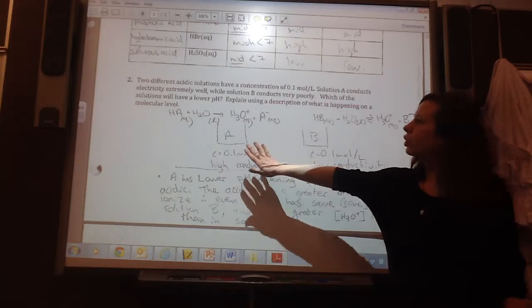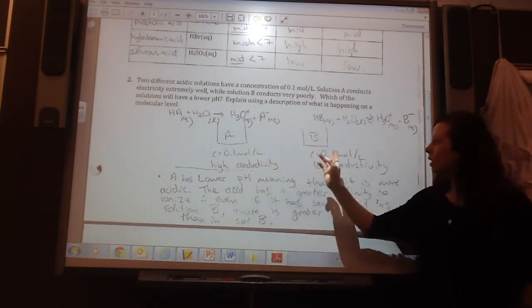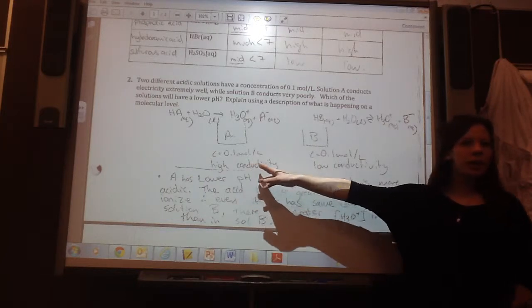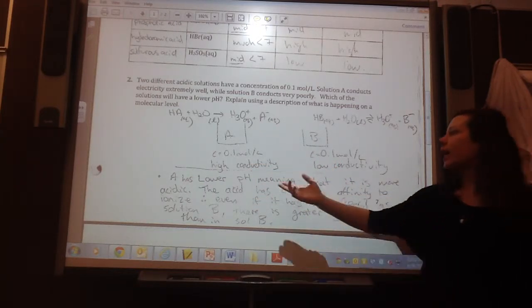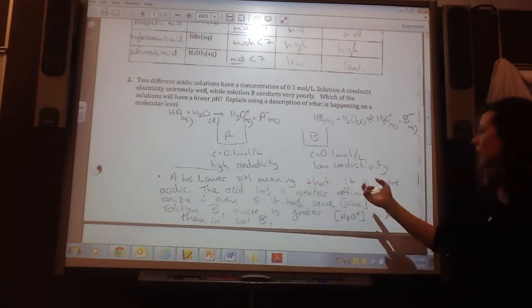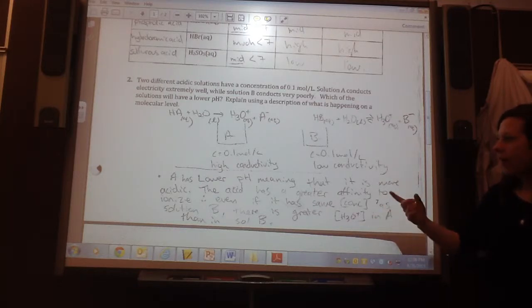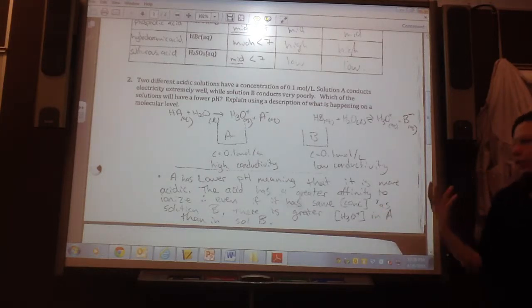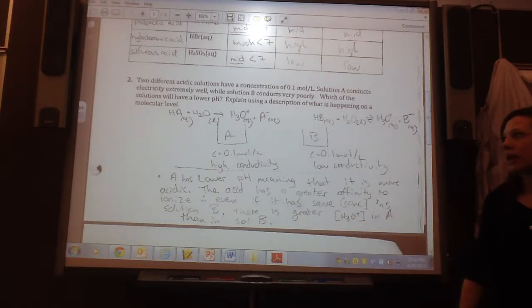So, I kind of just, I like to draw a little diagram saying, okay, here's A and here's B, they both have the same concentration. This one has high conductivity, this one has low. So, I said A would have a lower pH, meaning that it is more acidic. The acid has a greater affinity to ionize. Therefore, even if it has the same concentration as solution B, there is greater hydronium ions in A than in B.